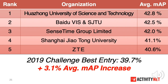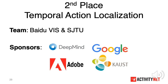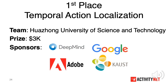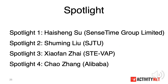Congratulations to all the teams. In the following sections, Baidu Vis and SJTU team will share their experience. Their team won the first prizes in 2018 and 2019. In this year, they are the runner-up, but have a very close score to the task winner. Later, the team of Huazhong University of Science and Technology will also report their method. It's the first time for this team to win this honor in the ActivityNet Challenge. We also have four spotlights to share the novel ideas from this year's participants. The state-of-the-art may be your submission next year.